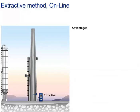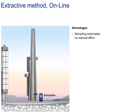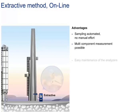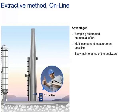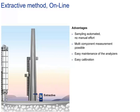The extractive method offers some significant advantages. Like with the in-line method, the sampling is performed automatically without manual effort. But extractive methods are more efficient because many components can be measured simultaneously. Maintenance of the equipment is superior with better accessibility and separation from the process. Another advantage is the easy calibration of extractive analyzers — in-line analyzers normally can't be calibrated without dismounting.